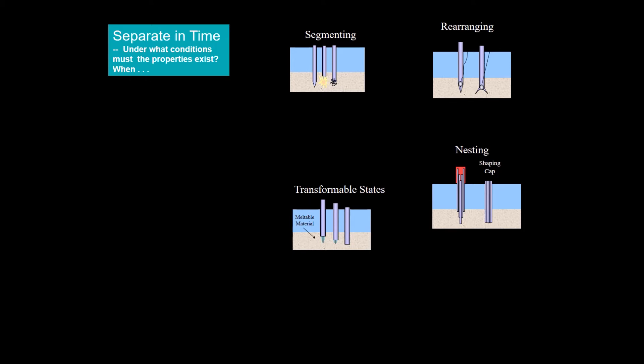With transformable states, we use a melting tip that remains sharp while it is being driven. Later it is melted to make it flat.